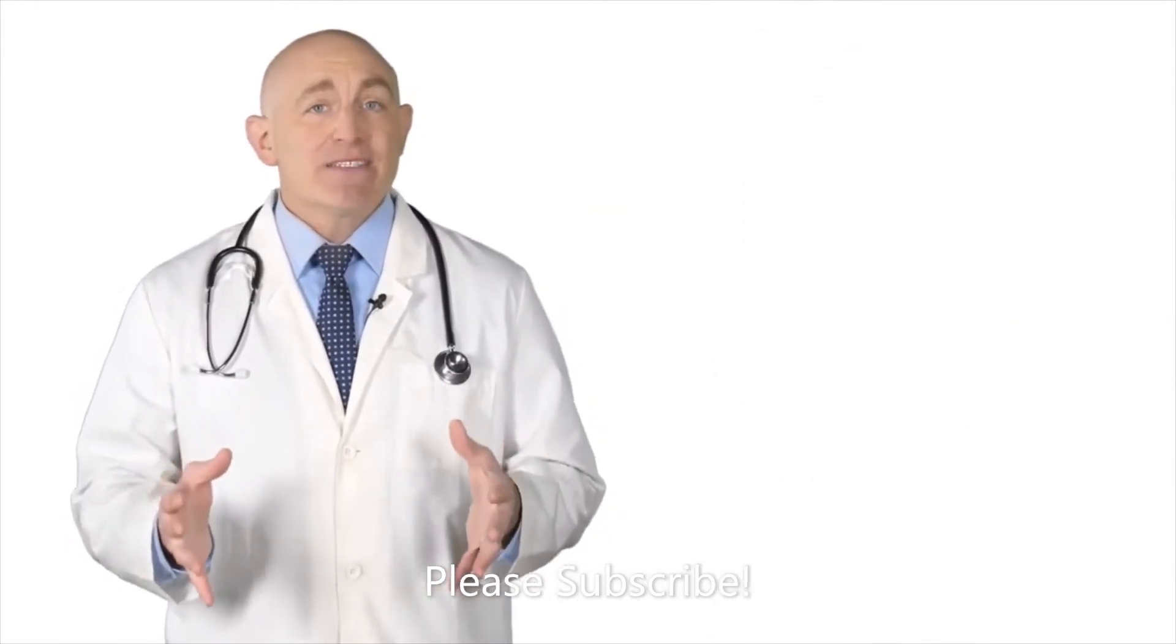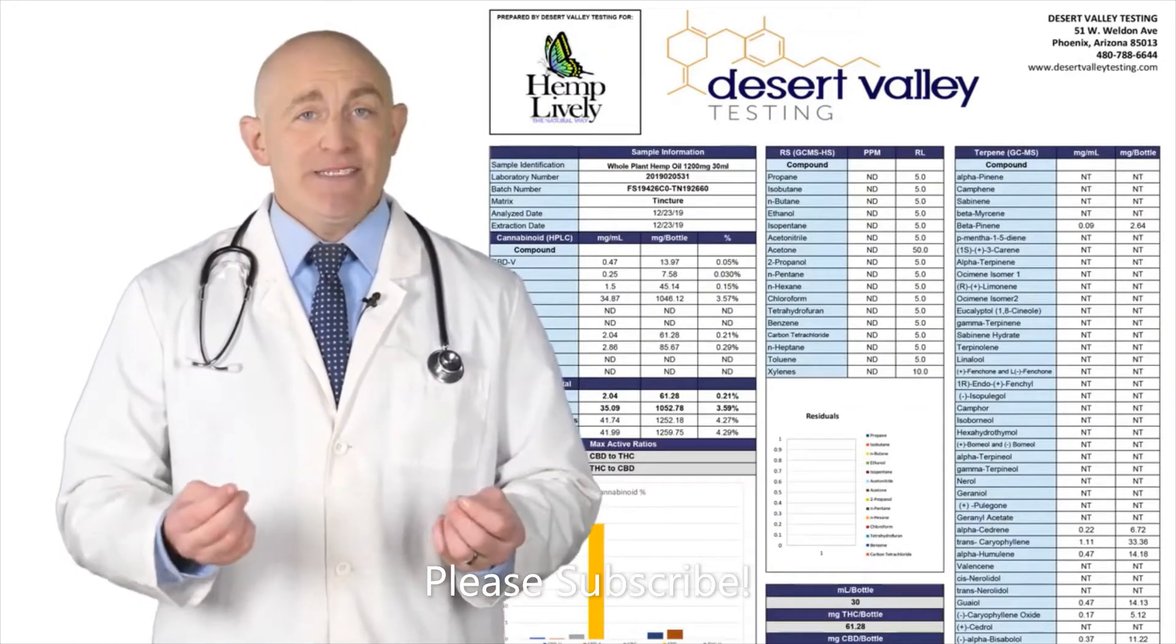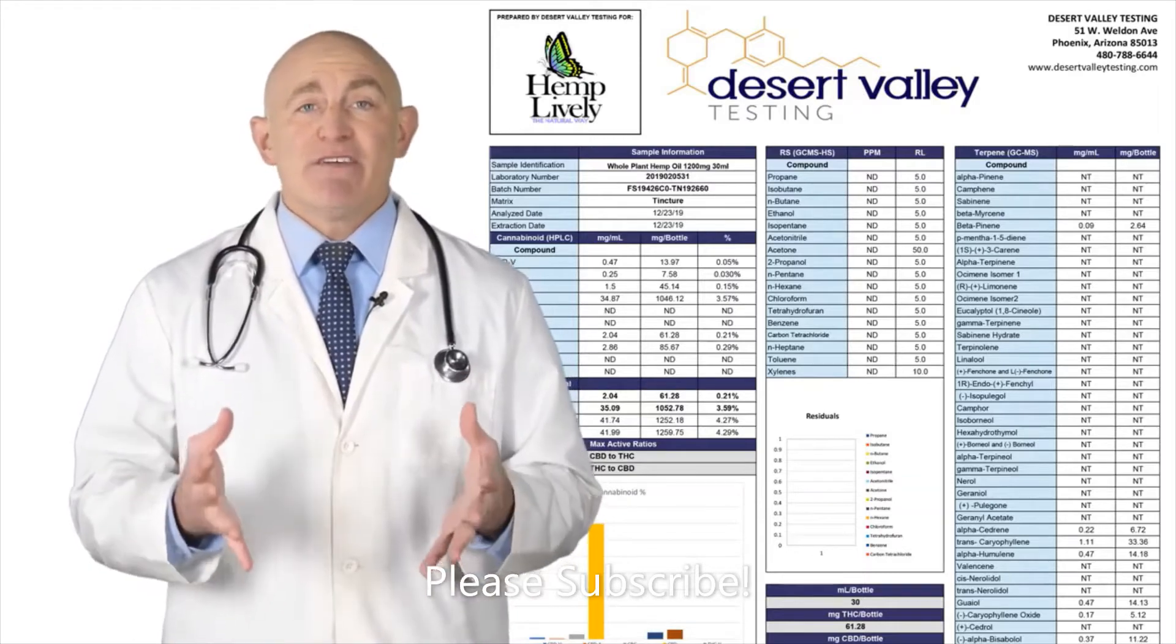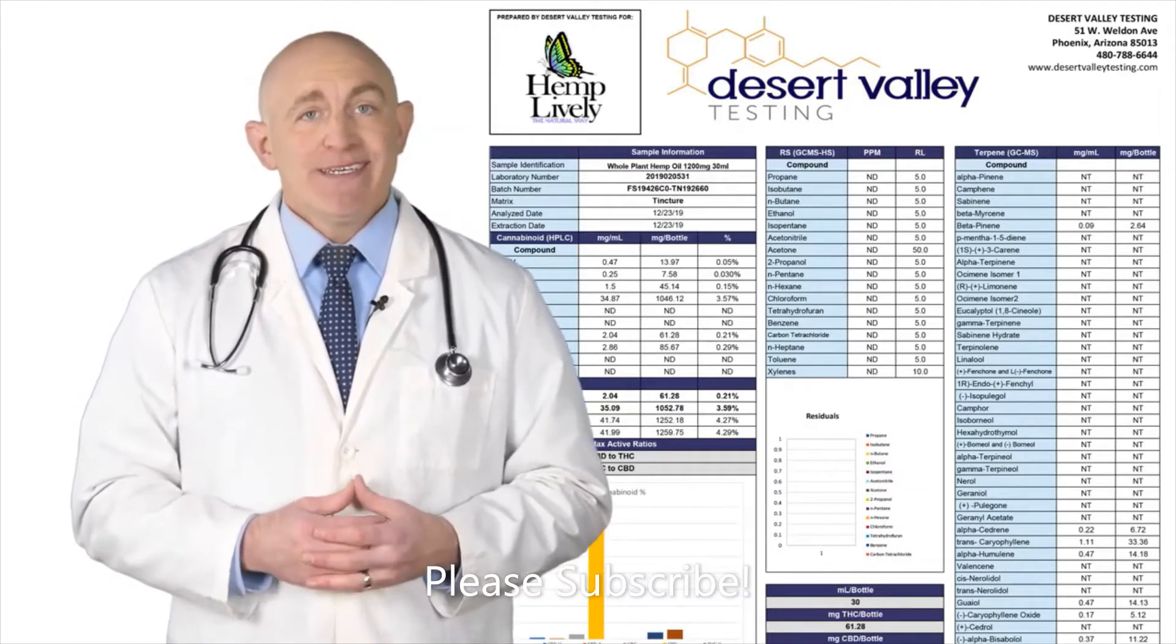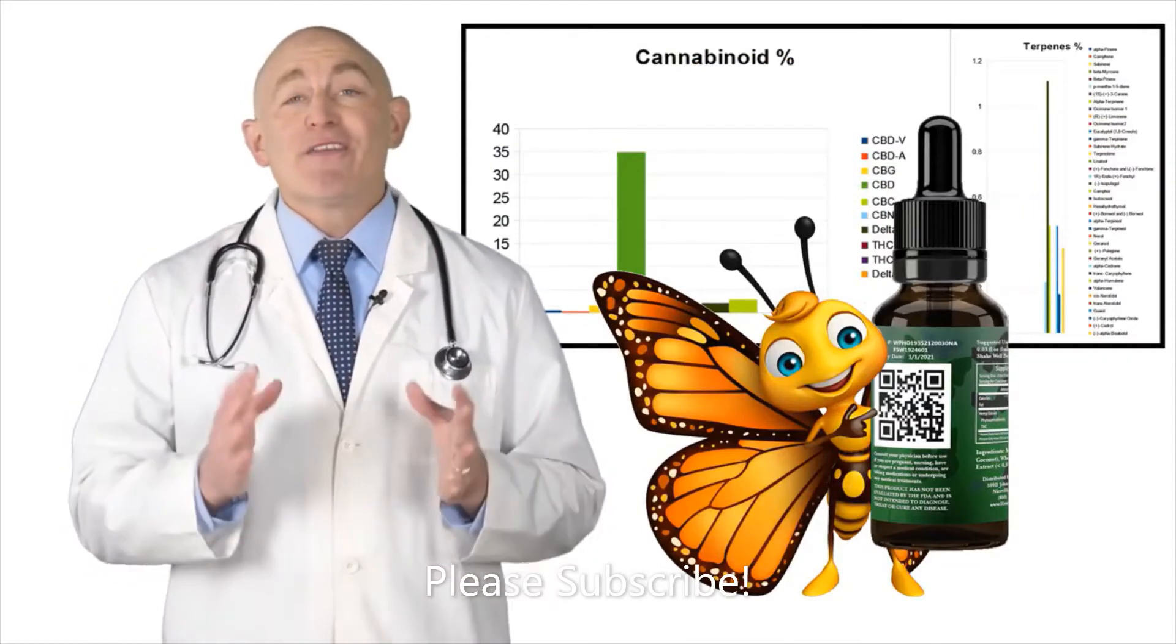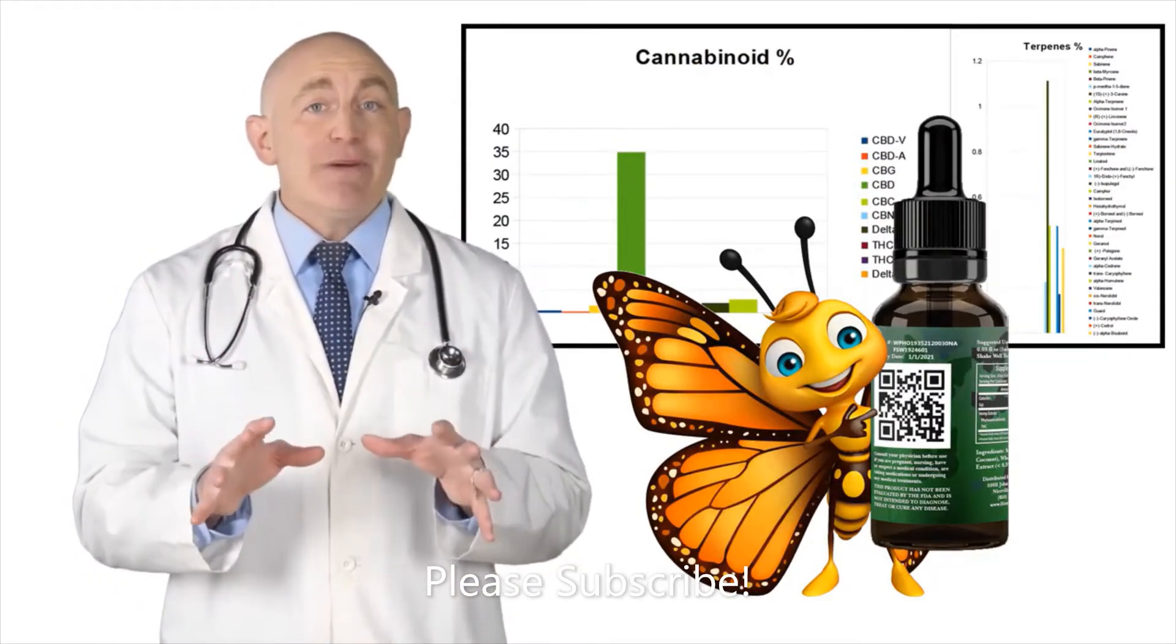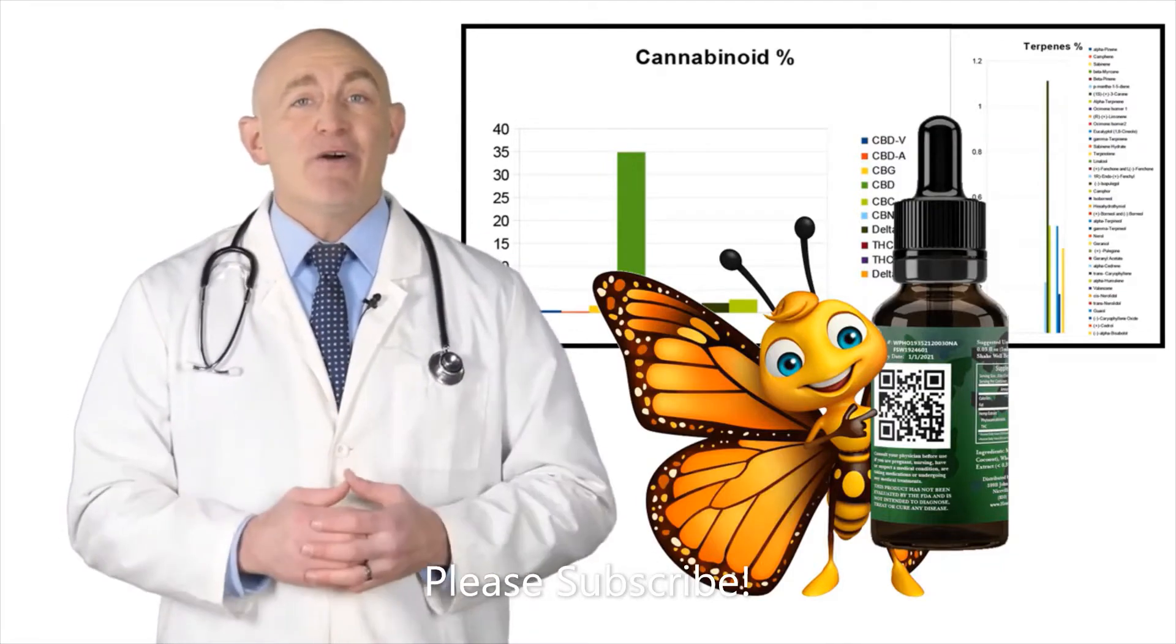HempLively products are full panel lab tested for potency, terpenes, heavy metals, pesticides, residual solvent, and microbials. You'll be able to see the levels of these major phytocannabinoids on the Certificate of Analysis, or COA, which can be viewed by simply scanning the QR code on the label.